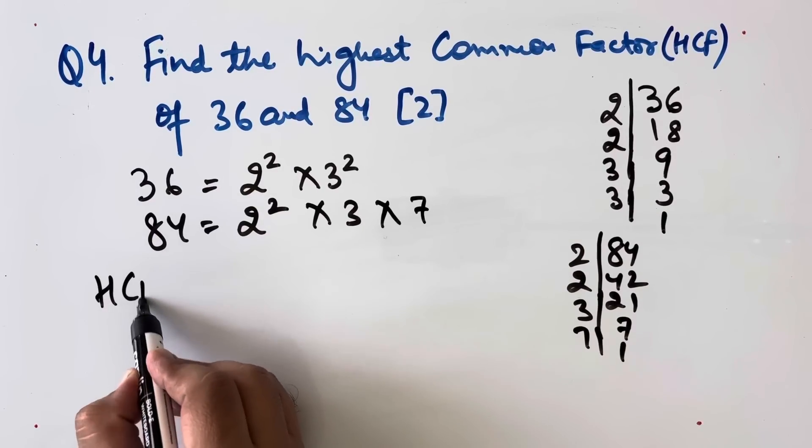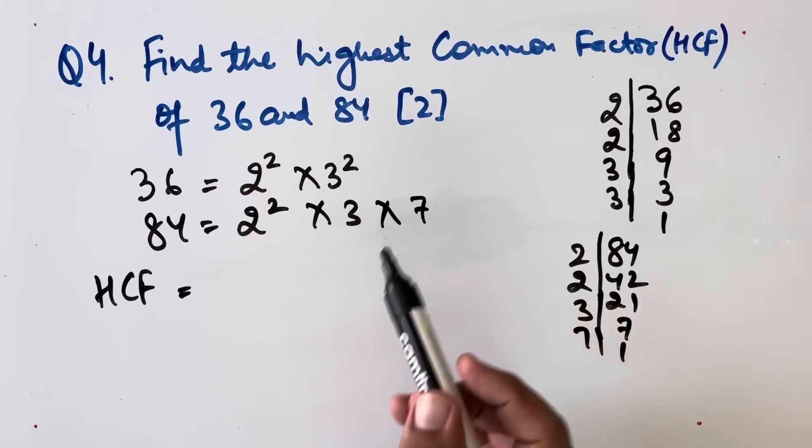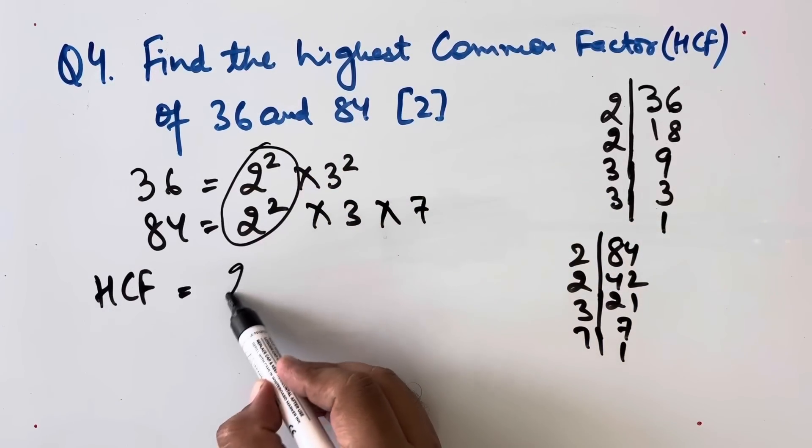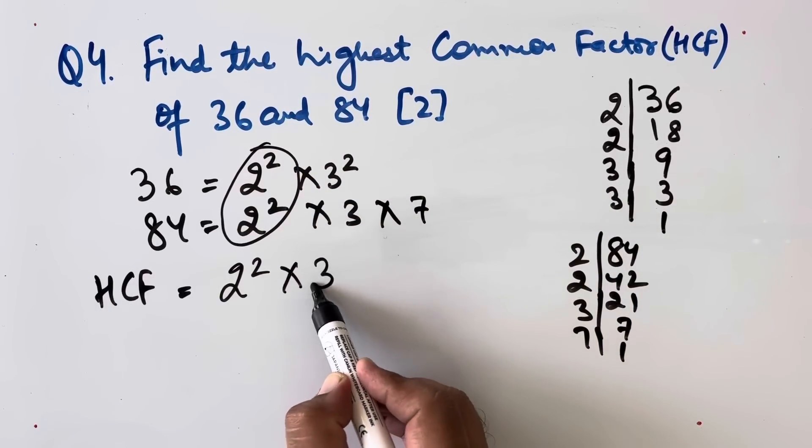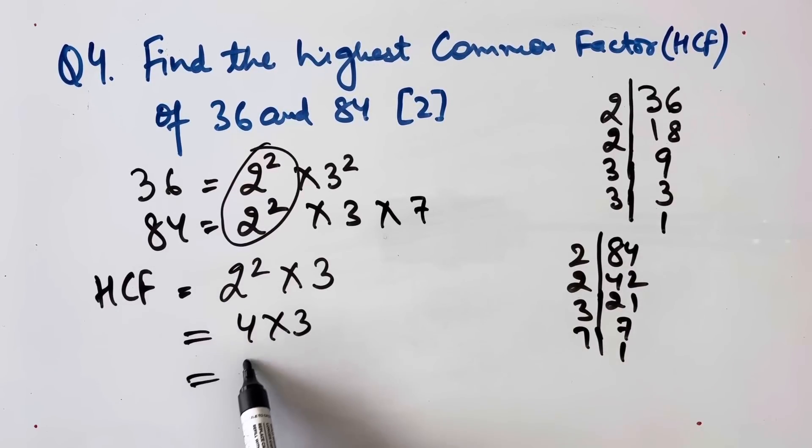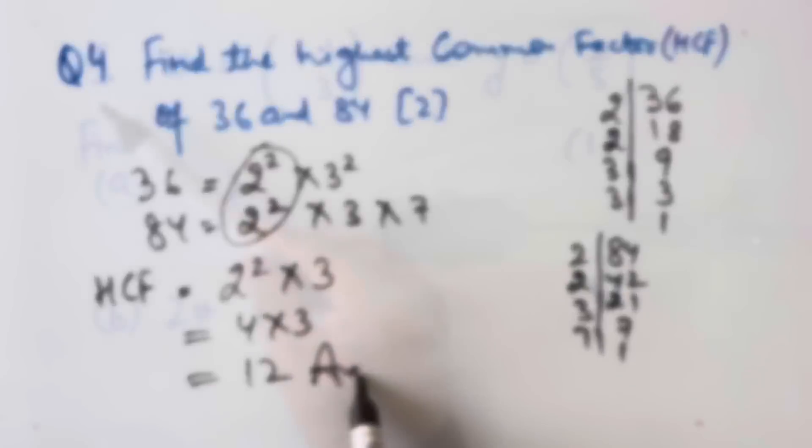Now we need to find the HCF. So we will be writing the highest common factors. This is 2^2 × 3. This will be equal to 4 × 3. 12 will be our answer. Question number 5.